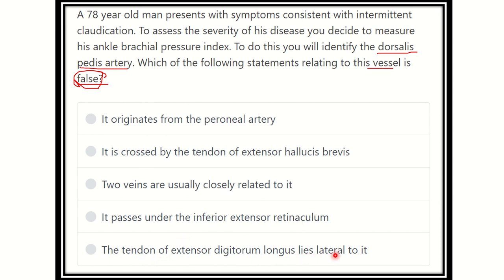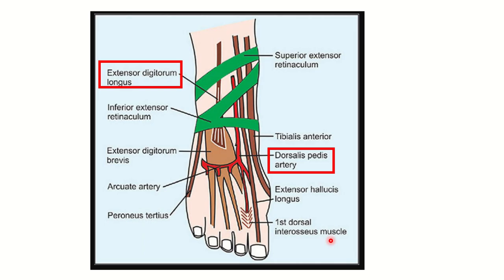Now let's look at details about the dorsalis pedis artery. In this picture we can see the dorsalis pedis artery, and if we trace it backward we can see it is a continuation of the anterior tibial artery. The dorsalis pedis artery is the continuation of the anterior tibial artery, and it passes behind the extensor retinaculum at the ankle joint.